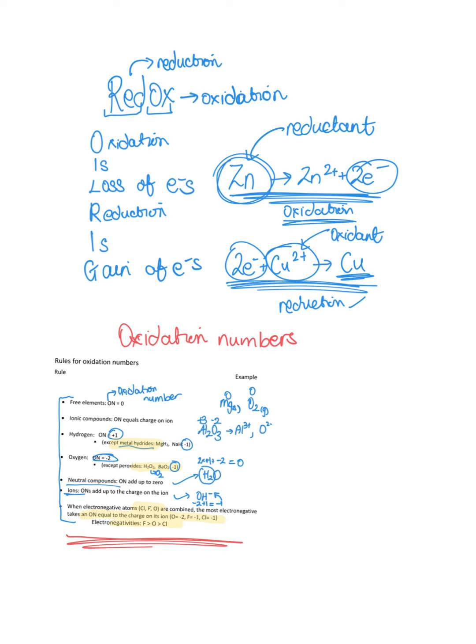You can see that there are certain rules as to how we assign our oxidation numbers. So if it's a free element or something that's neutral, not in a compound, the oxidation number is zero. In ionic compounds, the oxidation number equals the charge on an ion. That's why we need to know our ions. So something like aluminium will have a +3, oxygen or oxides will have -2.